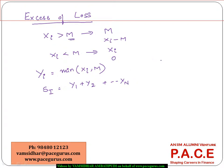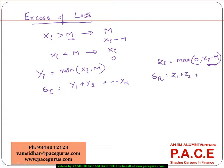Similarly, when looking at it from the reinsurer's standpoint, his payment is the maximum of 0 and X_i minus M — because if X_i is less than M he is not paying anything, and if X_i is greater than M he is paying the difference. So from the reinsurer's perspective, the aggregate claim is Z_1 + Z_2 + Z_3 + ... + Z_N.